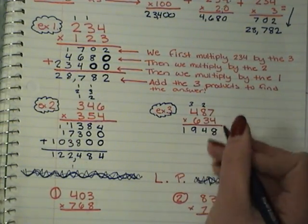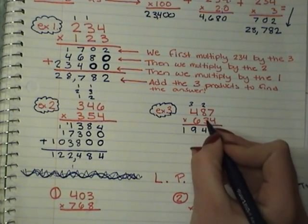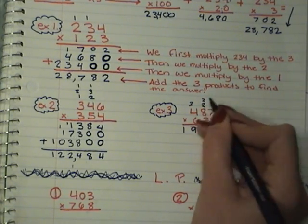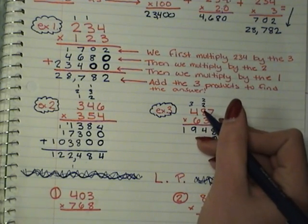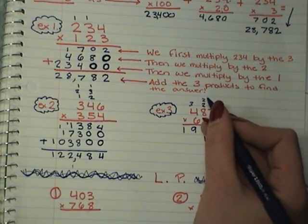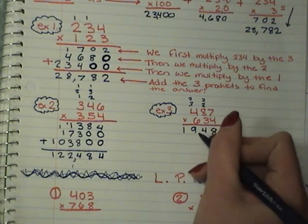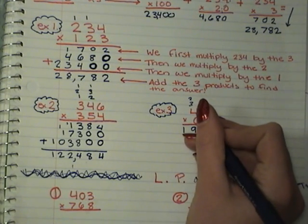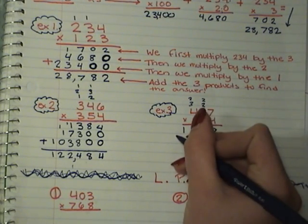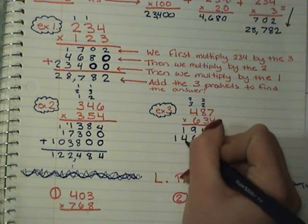I'm on to my 3 now, so I need a 0. 3 times 7, 21. 3 times 8 is 24, 25, 26. 3 times 4 is 12, 13, 14. Add my 2.